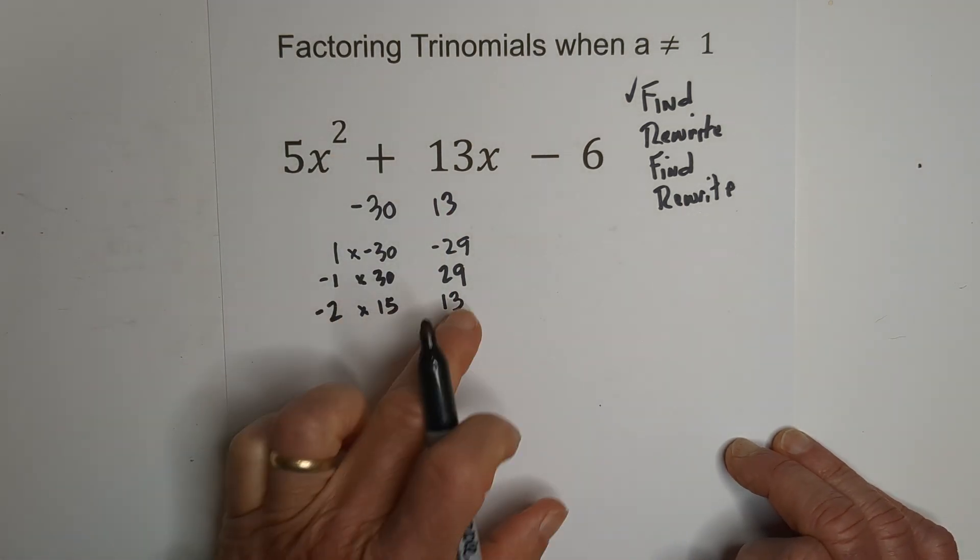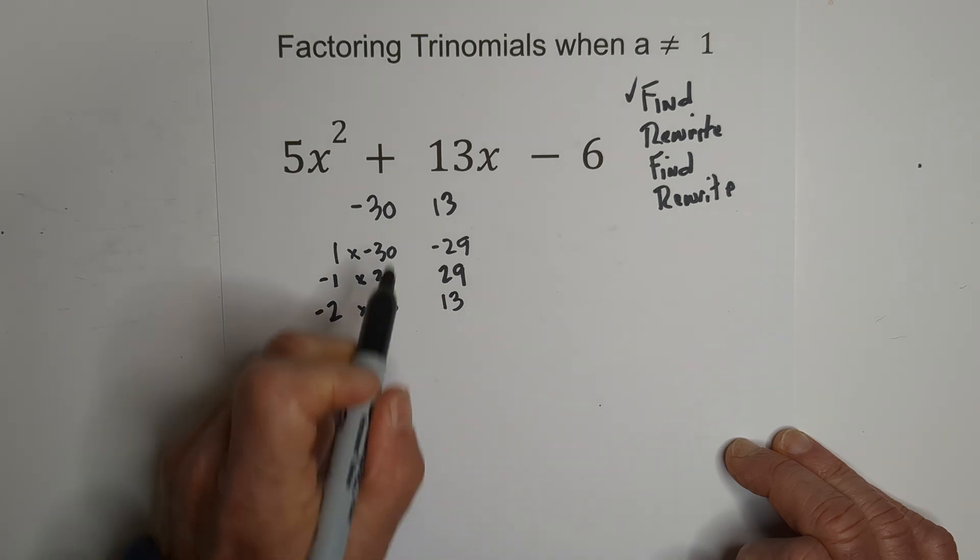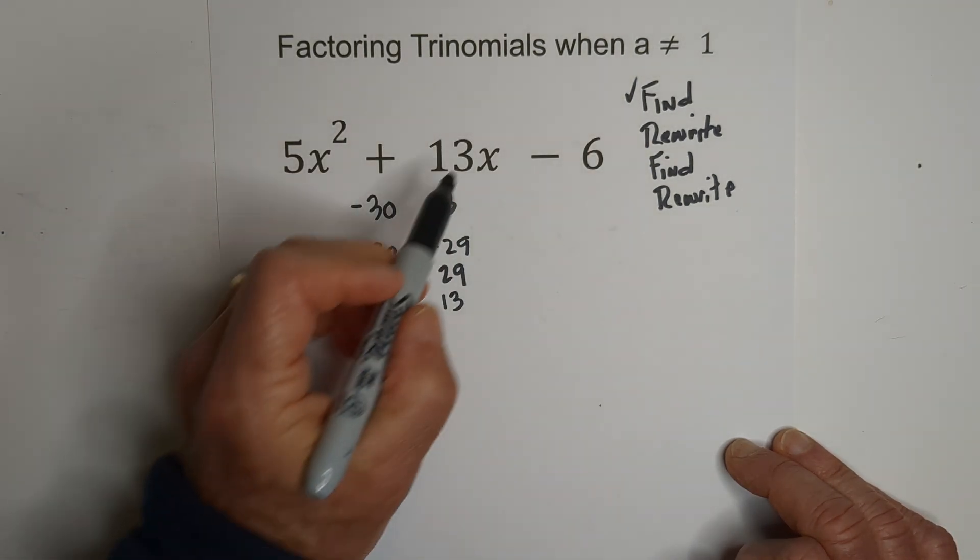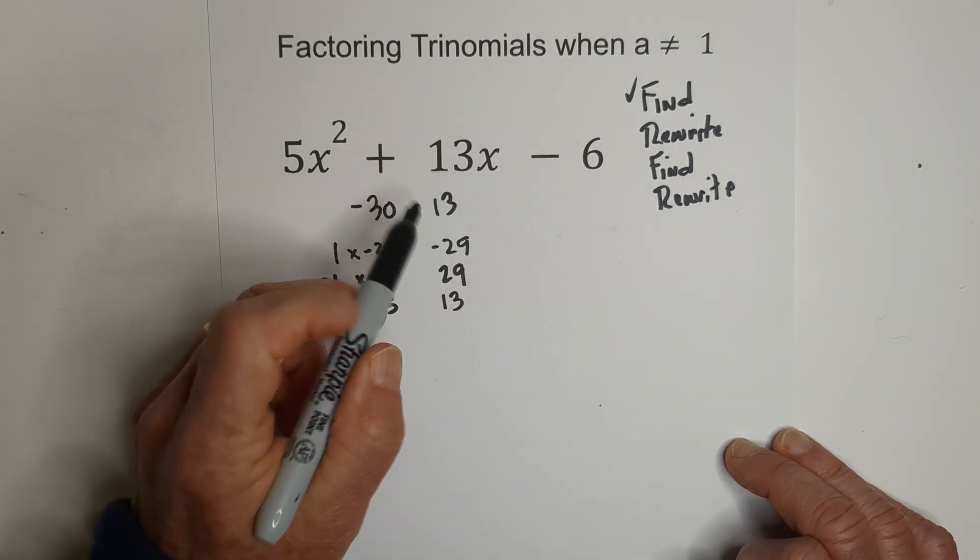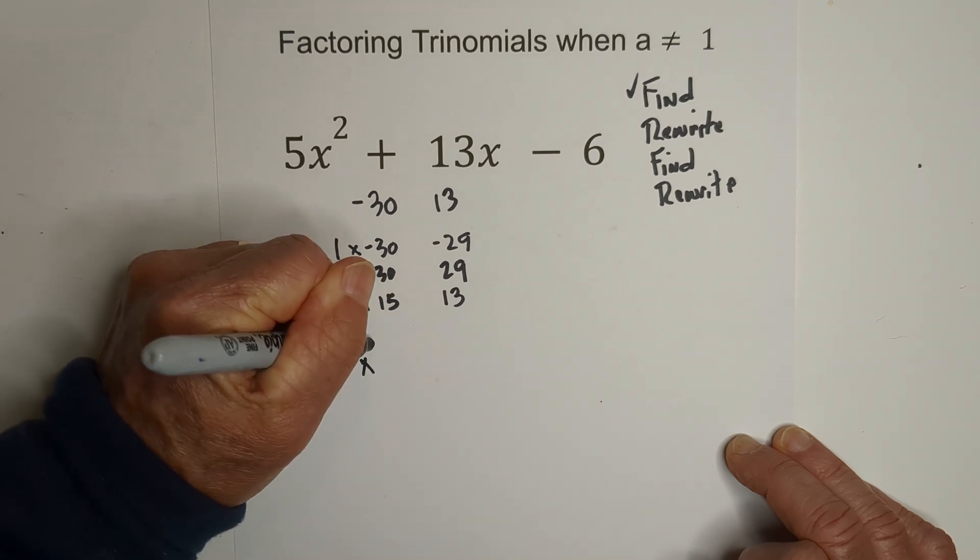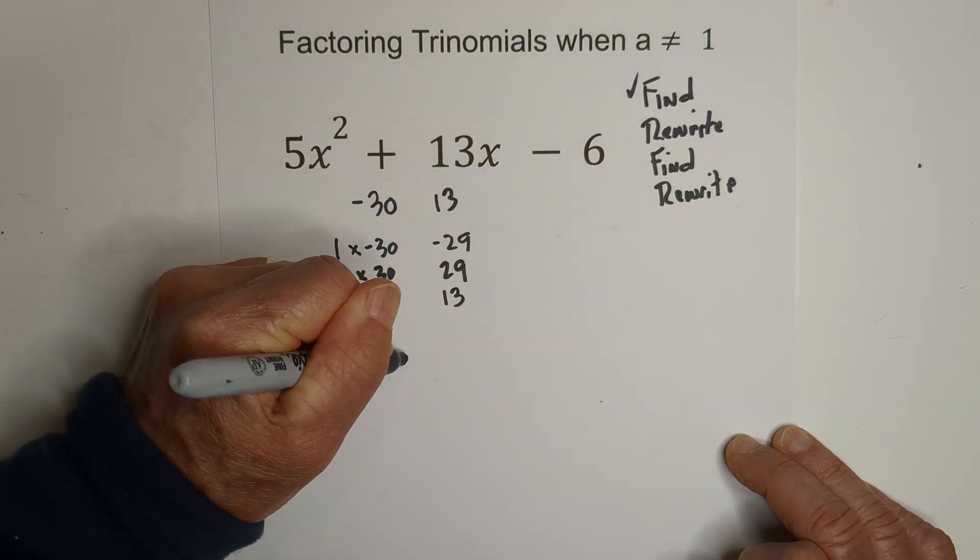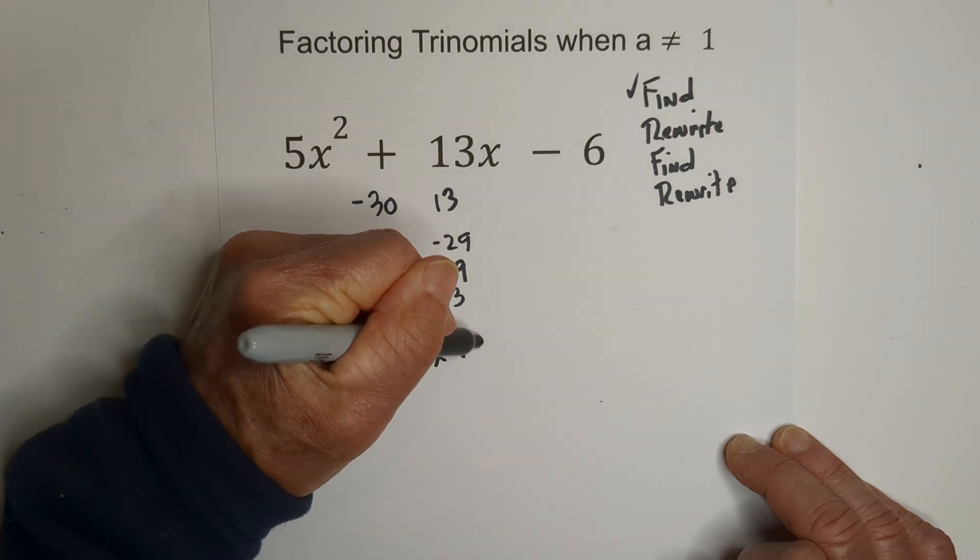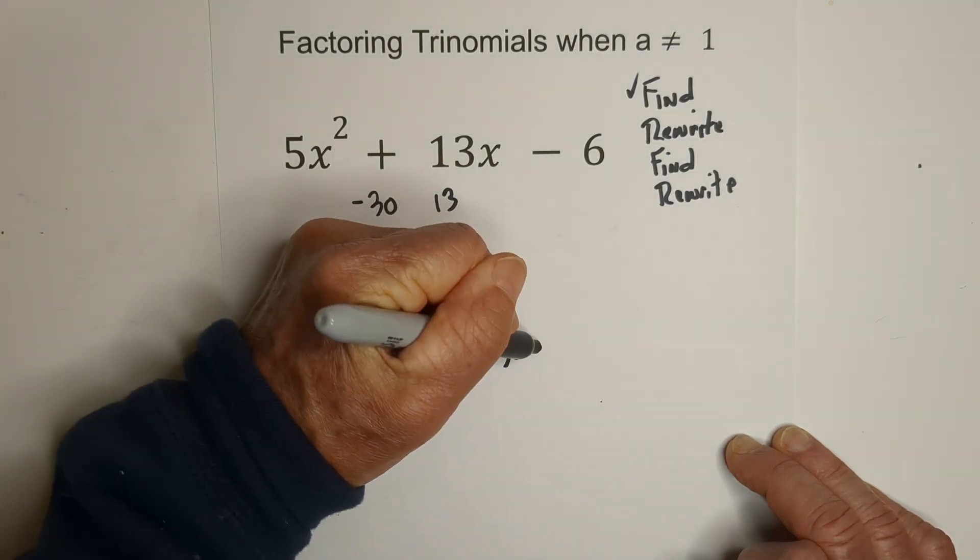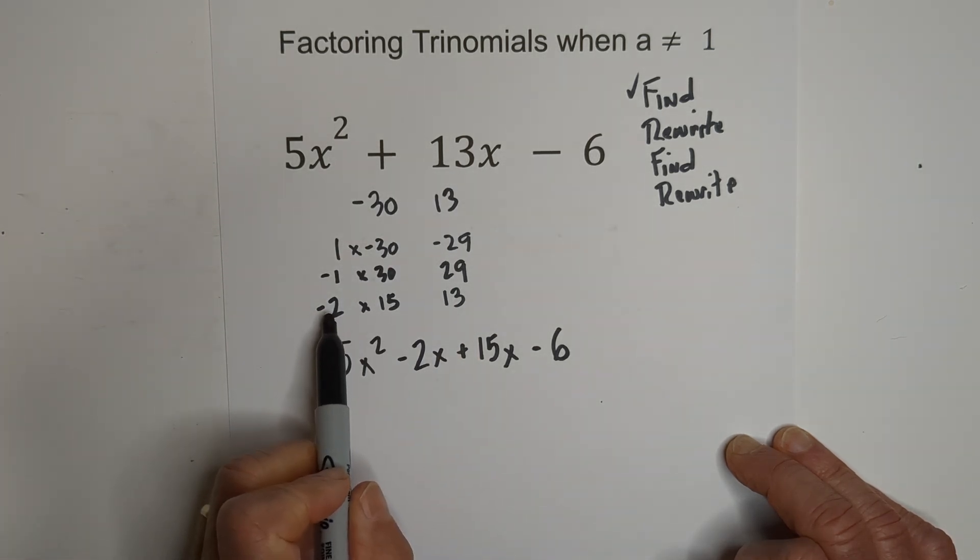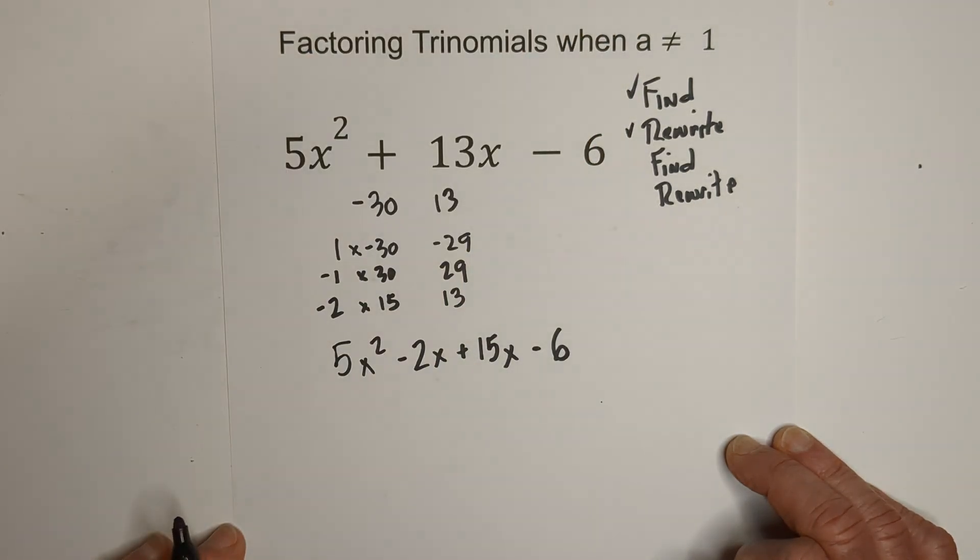So now we have our two terms that multiply together to equal this middle term. Now, we're going to rewrite, and what we're going to do is we're going to rewrite this 13x, but we're going to split it. We're going to rewrite it to where it looks like this: 5x squared minus 2x plus 15x minus 6. We're going to rewrite the 13 and just split it into these two terms that we found from step 1. So, we have rewritten it.